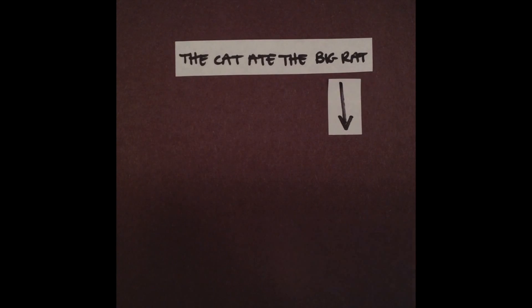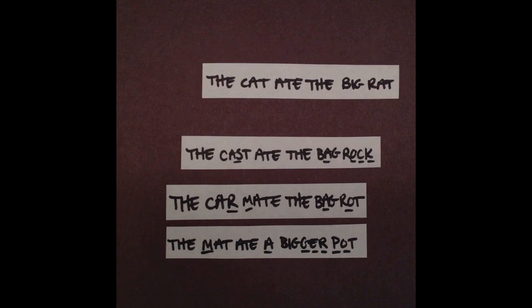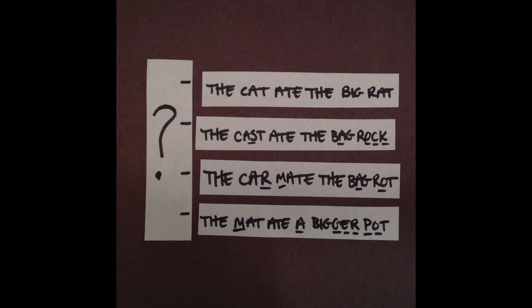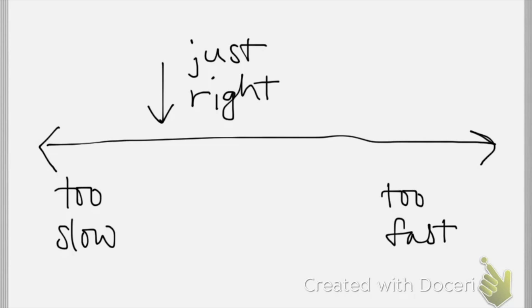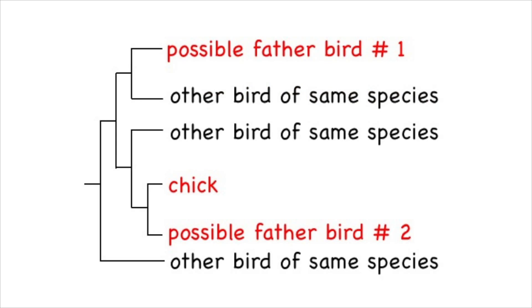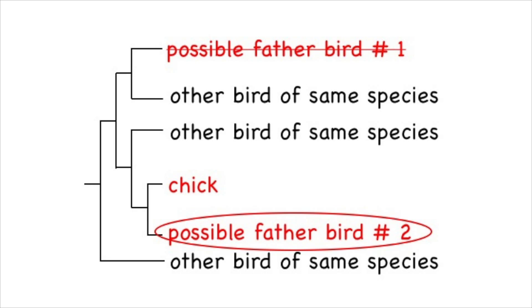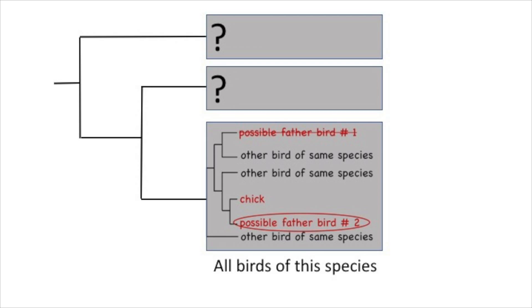In the opposite extreme case, in a very rapidly evolving gene, differences build up so quickly that it may be impossible to generate a tree showing sequential changes over longer timescales, since the degree of change is so great even among closely related groups. For this reason, we choose a gene for our study based on the question we're trying to answer. If we're interested in finding small differences among closely related organisms — for example, figuring out which bird is the father of the chicks in a nest — we need a rapidly evolving gene so that even individuals within the same species have enough differences to be distinguished. On the other hand, if we're asking how major lineages are related over evolutionary time — for example, whether a bird species should share a branch with flamingos or hummingbirds — we need a slowly evolving gene so there are not too many differences to generate a gene tree.